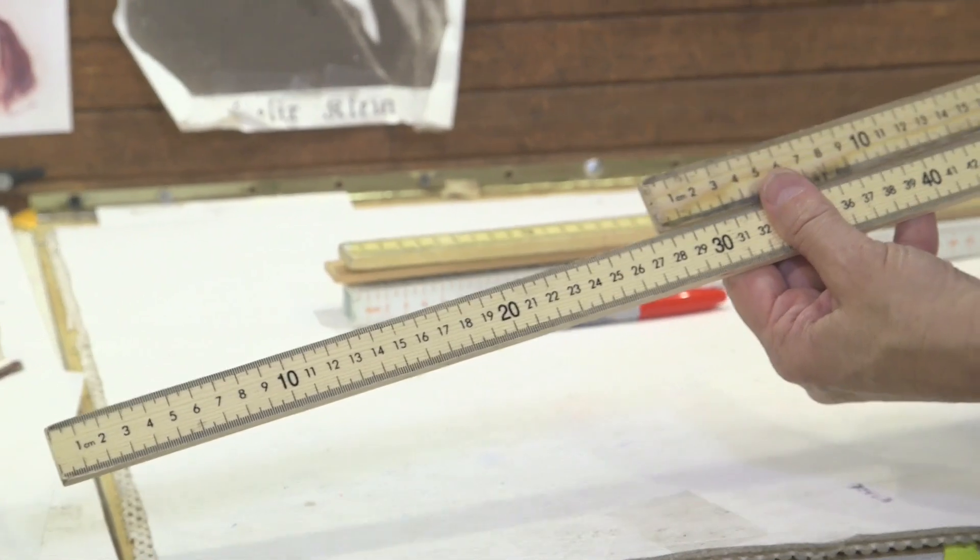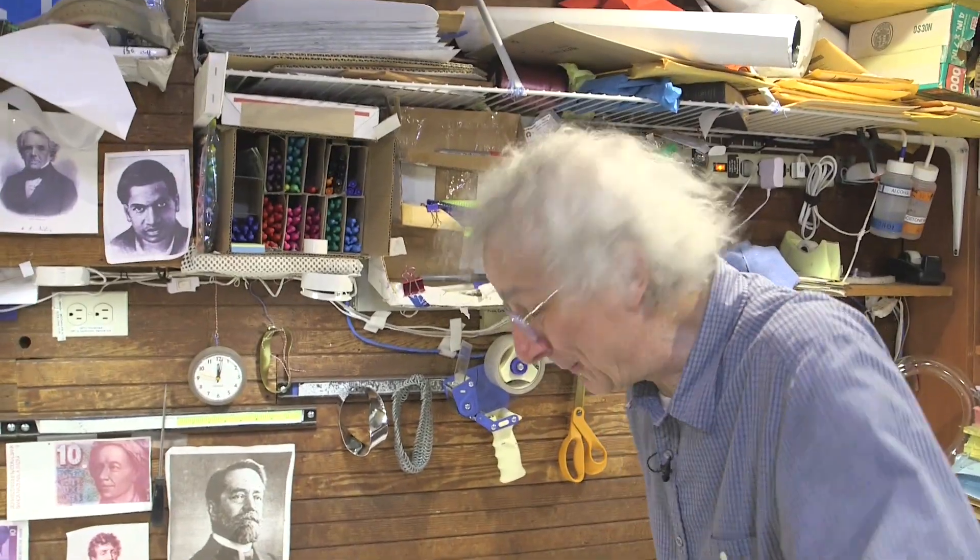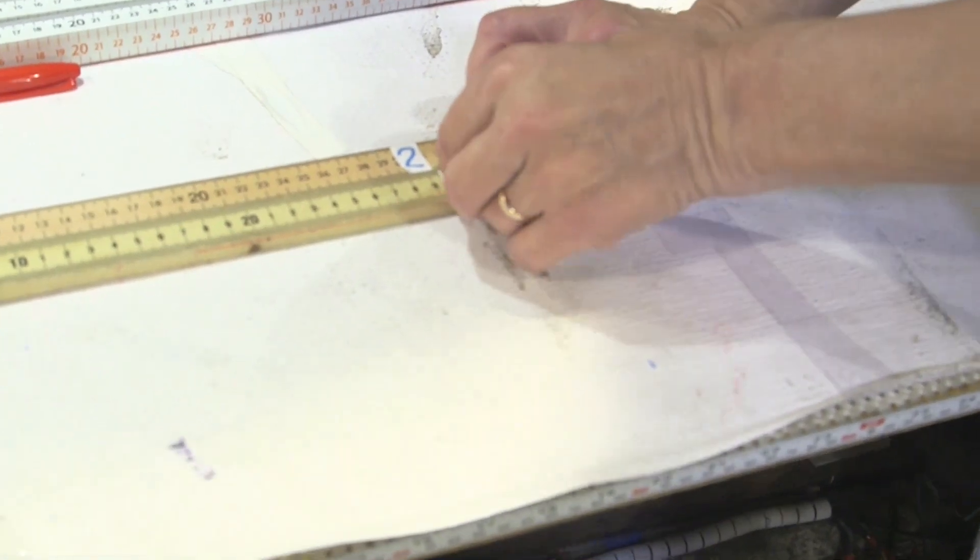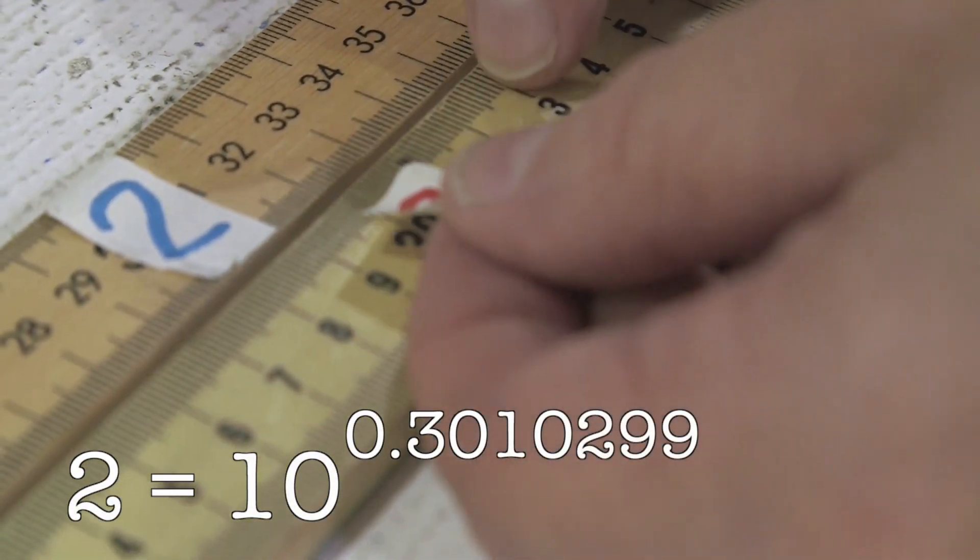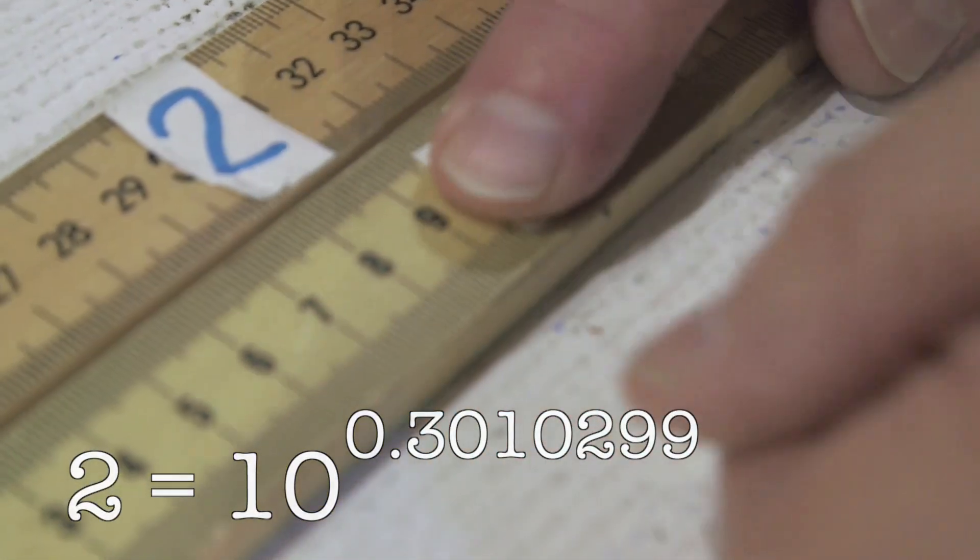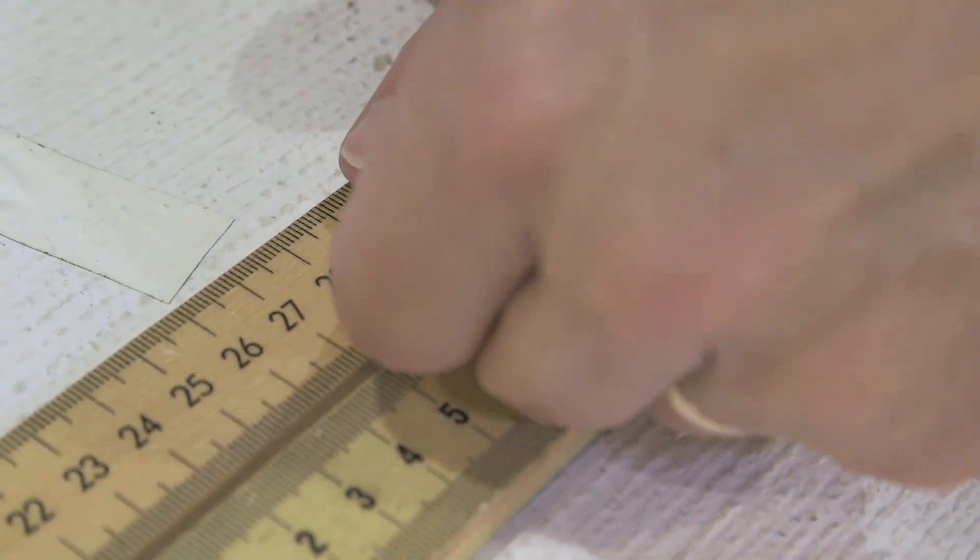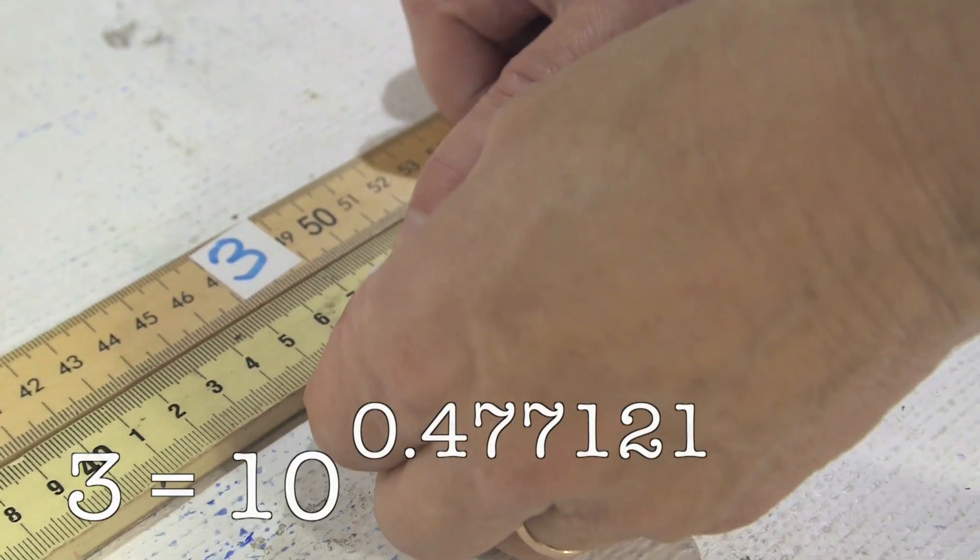So instead of adding and subtracting numbers on these two meter sticks, if I replace these with logarithmic sticks, I can multiply and divide. So I've got a pair of meter sticks where I've covered up a couple numbers with the log of that number. The logarithm of 2 is 0.301, so I'm going to cover up 0.301 with 2. Well, the logarithm of 3 happens to be 0.48, more or less.